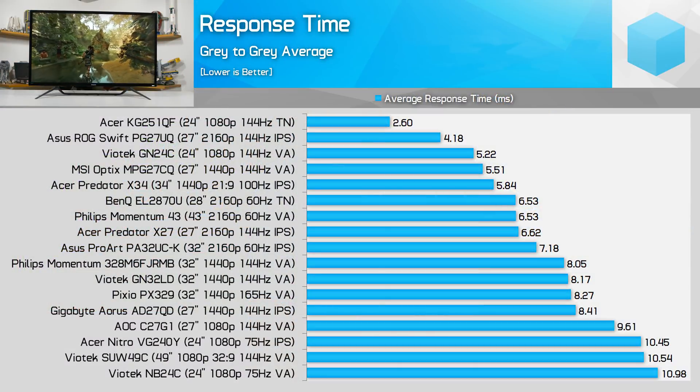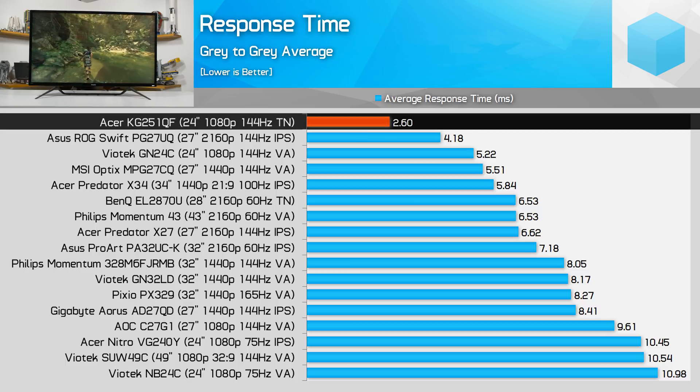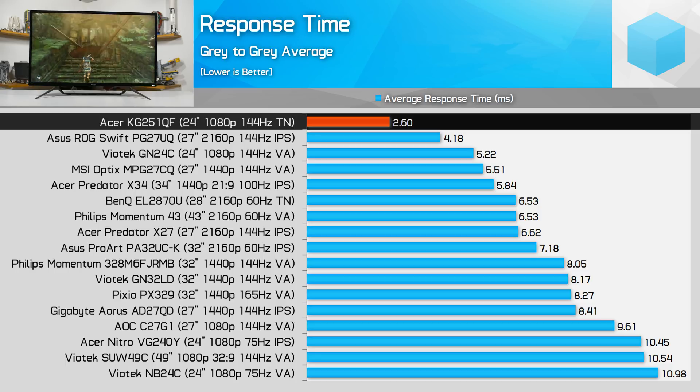The other major consideration is response times, which govern the level of ghosting, smearing, and overall clarity of a panel. Early IPS and VA panels were very slow, but this has improved a lot with modern panels, so the differences aren't as pronounced as they once were. TN still holds a strong advantage here — most TN panels have a rated transition time of one millisecond or lower, with actual grade-average measurements in the two to three millisecond range when overdrive is factored in, making TN the clear fastest technology.